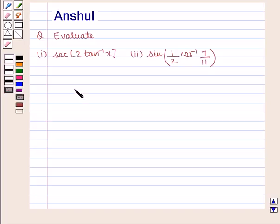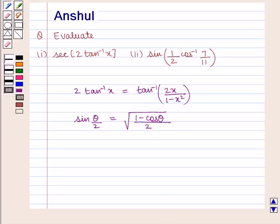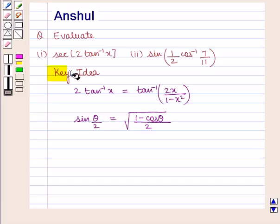We know that 2 tan inverse of x is equal to tan inverse of 2x upon 1 minus x square, and sin of theta by 2 is equal to square root of 1 minus cos theta by 2. With this key idea we shall proceed with the solution.